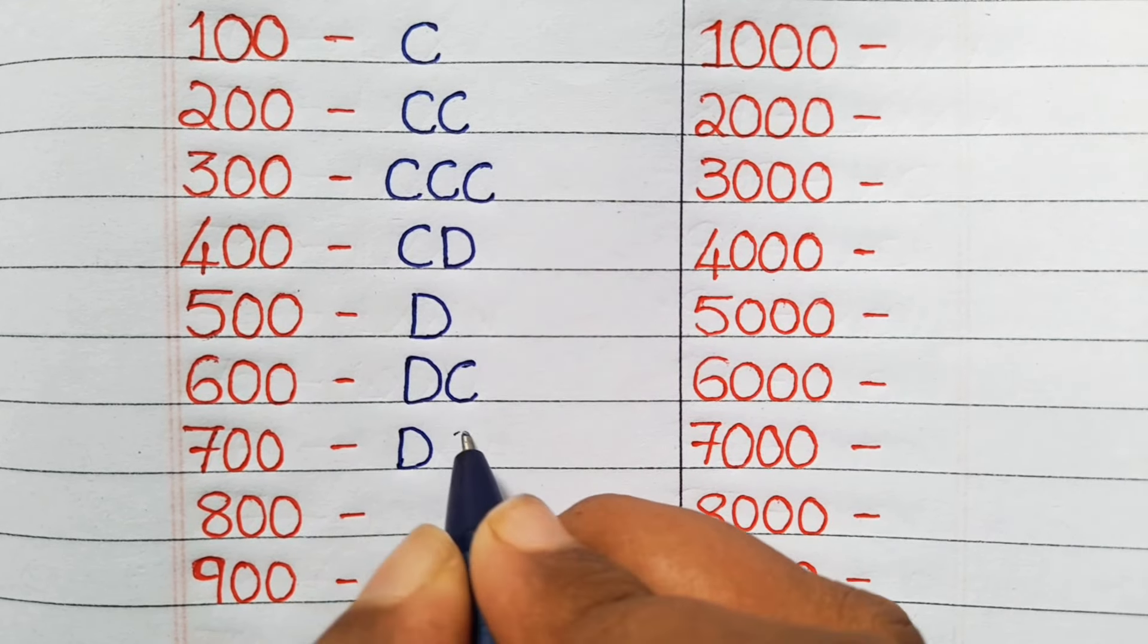Next, for four thousand we note it as IV with a line on the upper position. And also same for five thousand, V with a line on the upper position. For six thousand, VI with a line on the upper position. And for seven thousand, VII (two I's) with a line.